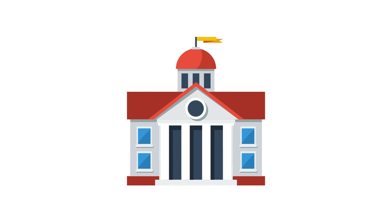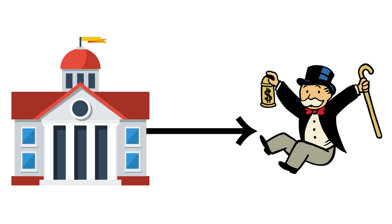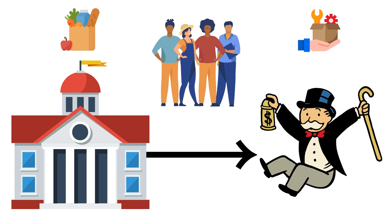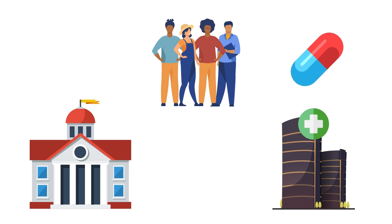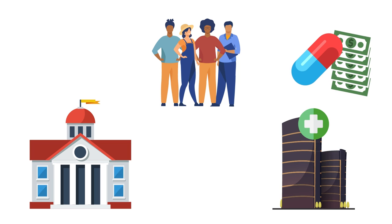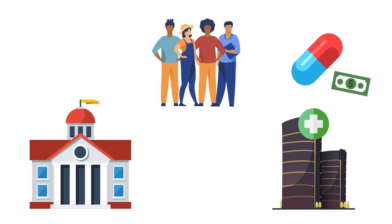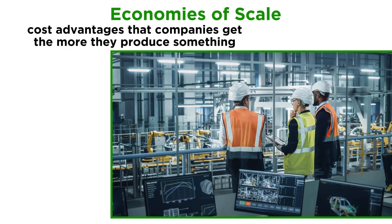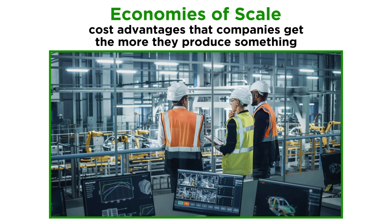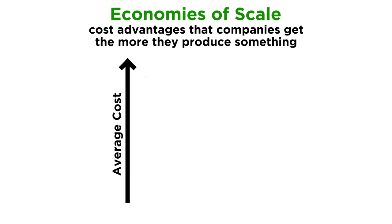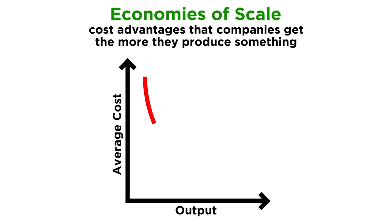Now sometimes governments willingly create monopolies. This is only because they are attempting to help consumers afford goods or services that have very expensive startup costs. For example, if a pharmaceutical company has to spend billions of dollars to research and develop the life-saving drug, a government may give money to the company to make the drug cheaper for consumers. Often it is a temporary measure until economies of scale kick in. Economies of scale are cost advantages that companies get the more they produce something. It's expensive at first, but once the company produces something at a large volume, it becomes more efficient for them to produce it, and therefore costs go down.